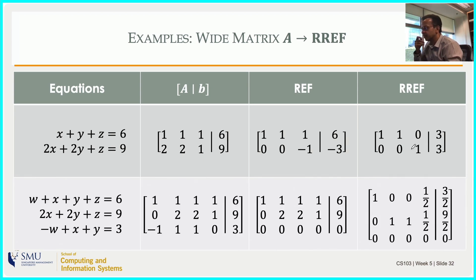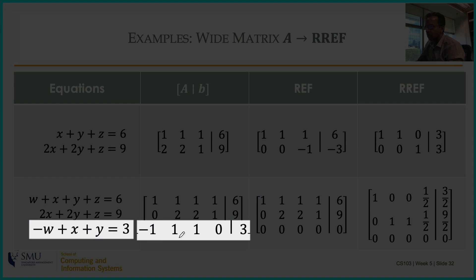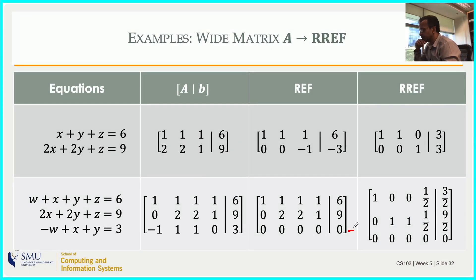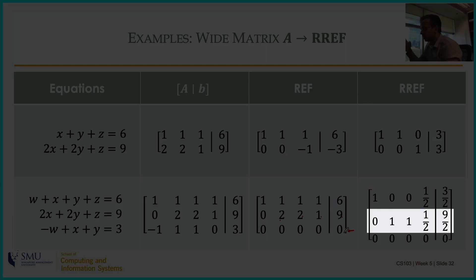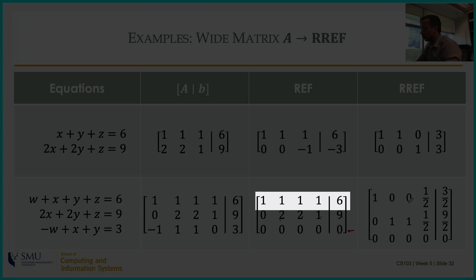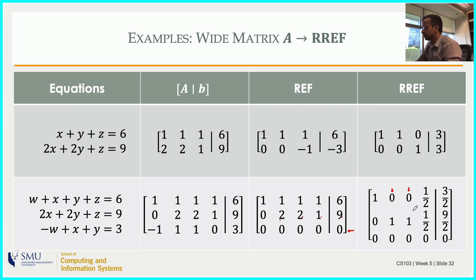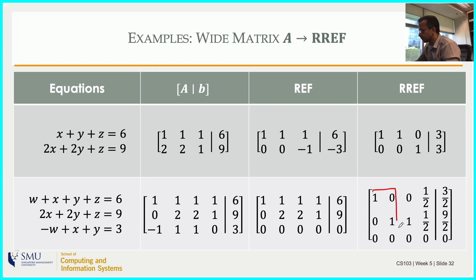Adding a fourth variable w: w + x + y + z = 6, 0w + 2x + 2y + z = 9, -w + x + y + 0z = 3. During Gauss-Jordan, divide the second row by 2 to get a leading one, then subtract it from adjacent rows to zero out entries. The resulting RREF of this wide rank-deficient matrix shows only two pivots in REF confirming rank 2, with a 2×2 identity matrix visible in the pivot columns and one zero row since the rank deficiency is one.